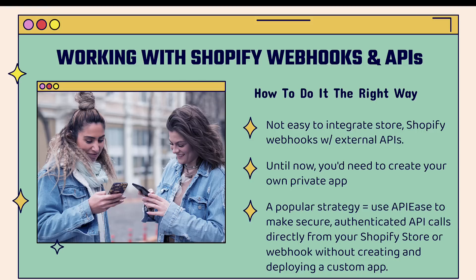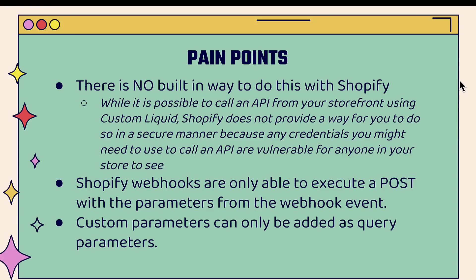When you want to work with Shopify webhooks and APIs at a high level, a popular strategy right now is to use APIease. They make it really easy to make secure, authenticated API calls directly from your Shopify store or webhook without needing to create and deploy a custom app. It's going to save you a lot of time, money, and aggravation. There's definitely no built-in way to do this with Shopify. It's possible to call an API from your storefront but you need custom Liquid code, and Shopify doesn't provide a way to do this securely — any credentials you use are vulnerable.